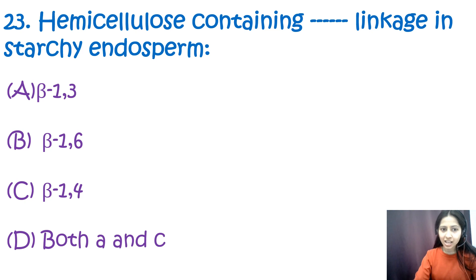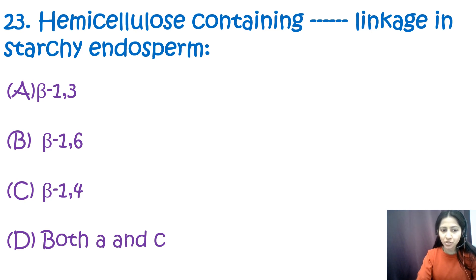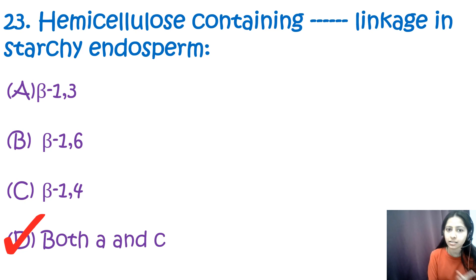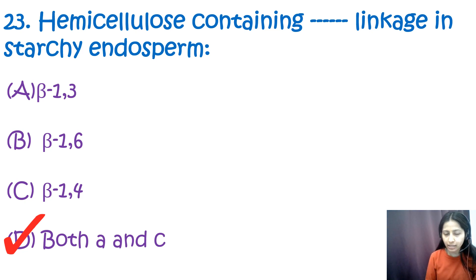Question 23: The hemicellulose containing which linkage in starchy endosperm — beta 1,3; beta 1,6; beta 1,4; or both A and C? The correct option is D — both A and C, that is beta 1,3 and beta 1,4. Hemicellulose in starchy endosperm primarily consists of arabinoxylans and beta-glucans, where beta-glucans are composed of glucose units joined by beta 1,3 and beta 1,4 glycosidic bonds.